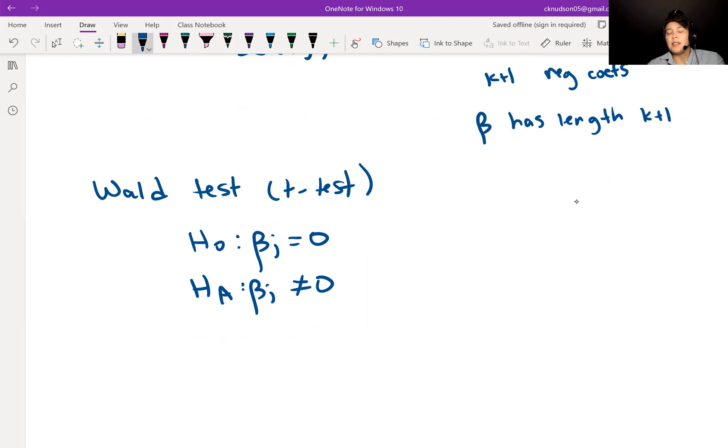We need to choose our significance level alpha. Then we can look at our test statistic, which is BJ minus beta J over the standard error of BJ.